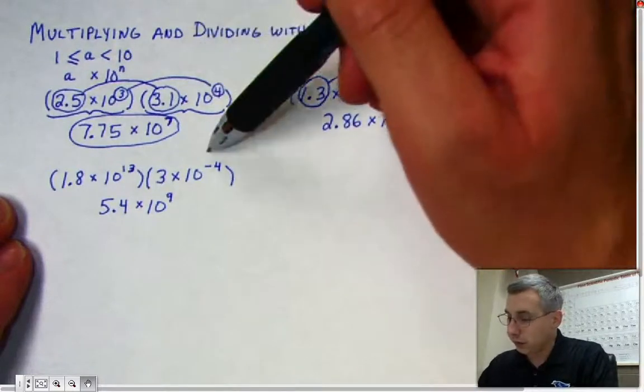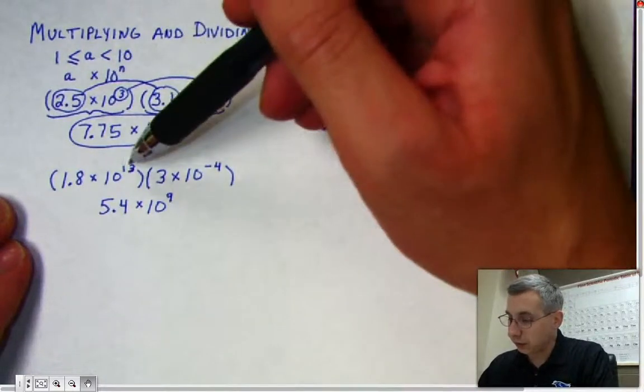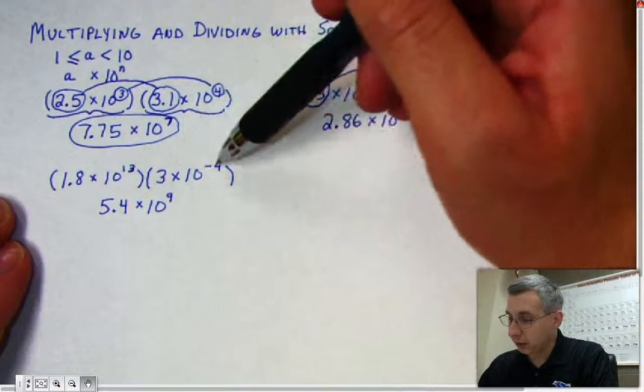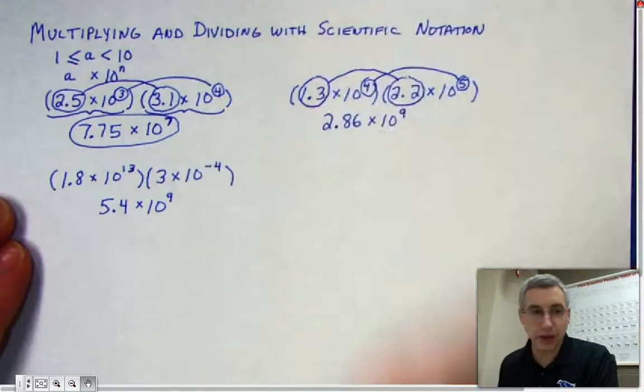Notice you have to be careful with your negative here. This is 13 plus a negative 4, giving you positive 9.